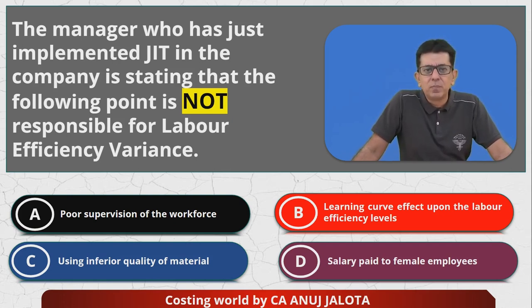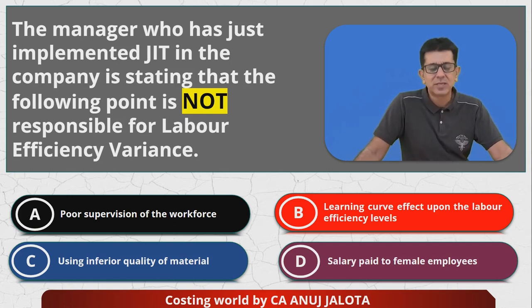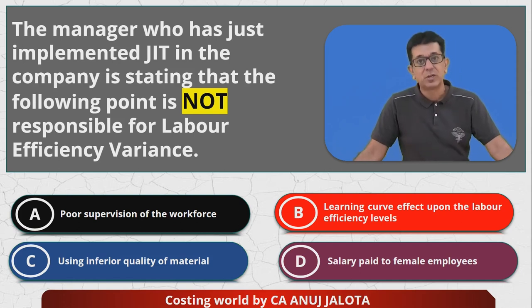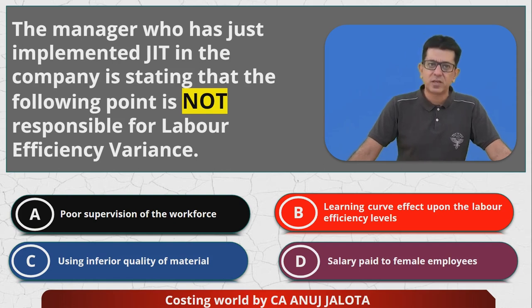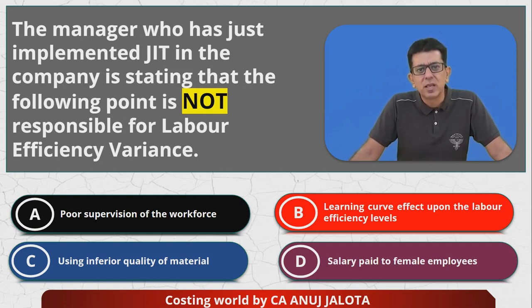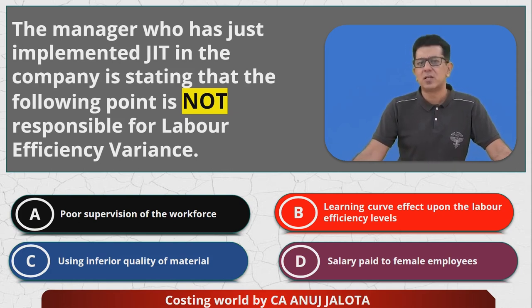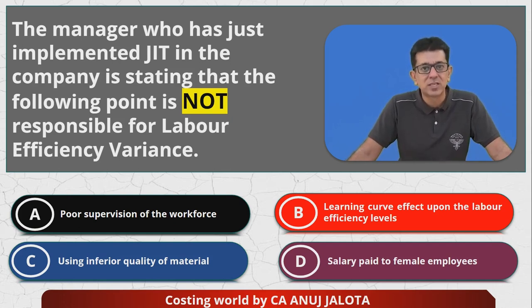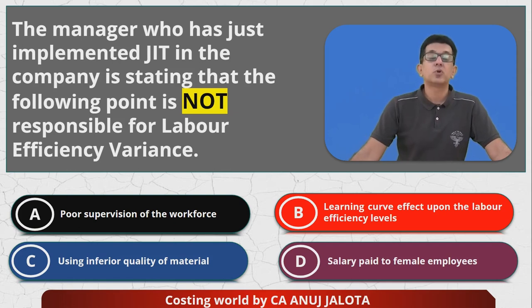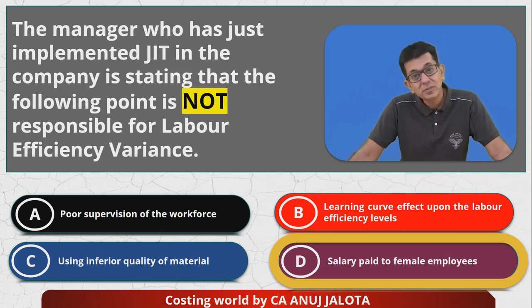Option D — salary paid to female workers. I cannot explain it because I don't understand the meaning of it. I don't know for whom I'm computing the labor efficiency variance. If it's for the males, how would the salary of the female employees affect the male workers' efficiency? In any case, since A, B, and C cannot be the answer, D has to be the correct answer. They should put better, more sensible words. The answer is D.